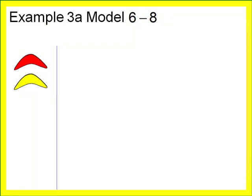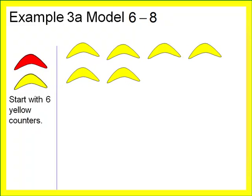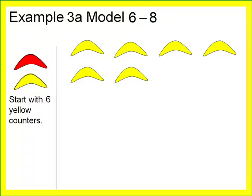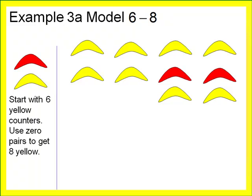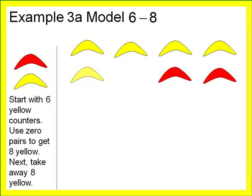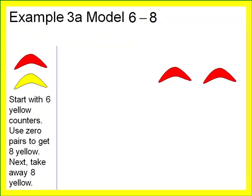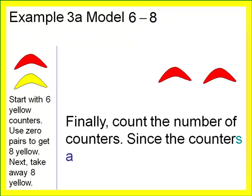For example three, let's model six minus eight. Start with six yellow counters to represent positive six. This asks us to take away eight, but we don't have eight yellow counters in the workspace. So we put in some zero pairs — adding zero doesn't change anything — until we get eight yellow counters in the workspace. Now we can take away eight yellow counters. What remains is the answer: six minus eight equals negative two.